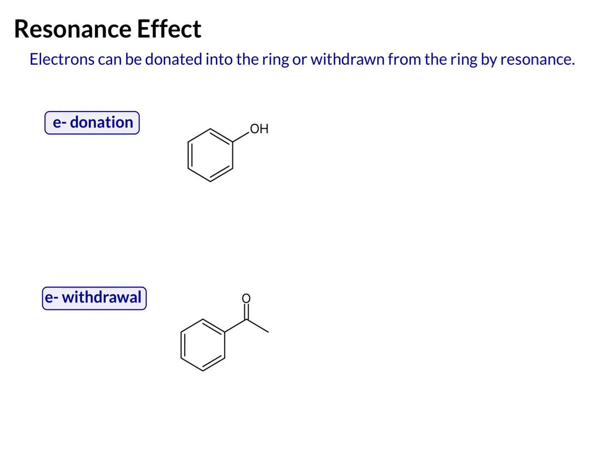Now let's take a look at some resonance effects. In resonance effects, electrons can be donated into the ring or withdrawn from the ring by resonance. And with resonance, remember we're dealing with lone pairs and pi bonds. So that's what we move through resonance.